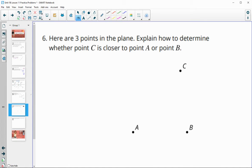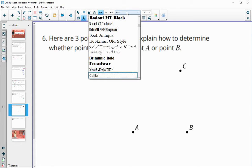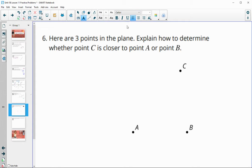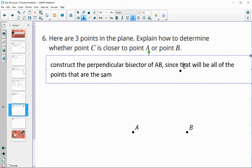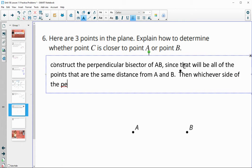Number six, here are three points in the plane. Explain how you would determine whether C is closer to A or to B. I would construct the perpendicular bisector of A, B, since that will be all of the points that are the same distance from A and B. And whichever side of the perpendicular bisector C is on, it is closer to that point.